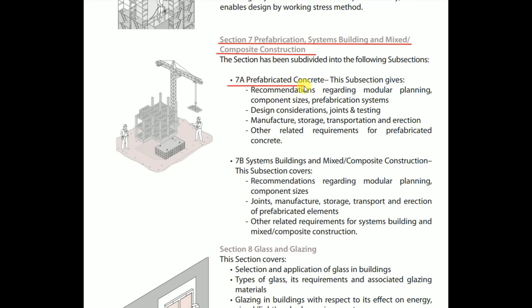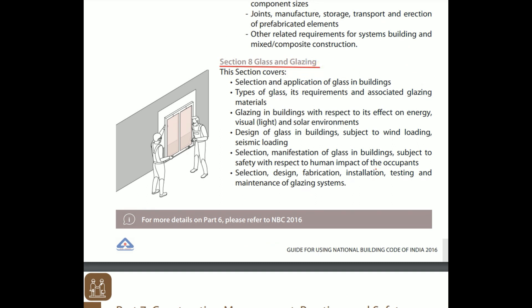Section 7 covers prefabrication, system buildings, and mixed or composite construction. Subsection 7A on prefabricated concrete gives recommendations regarding modular planning, component sizes, prefabrication systems, design considerations, joints and testing, and manufacture, storage, transport, and erection of prefabricated elements. Mixed or composite construction covers recommendations for modular planning, component sizes, joints, and manufacture, storage, transport, and erection — as well as other related requirements for system buildings and mixed or composite construction.